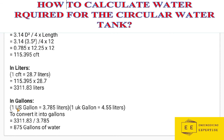Now let me calculate in gallons. We have two gallon standards: the US gallon and the UK gallon. In a US gallon, water capacity is 3.785 liters, and one UK gallon contains 4.5 liters. To convert to gallons, we will convert our liters into US gallons. So our total of 3311.83 liters will be divided by 3.785, the capacity of one US gallon.